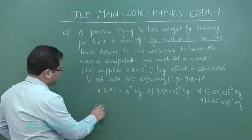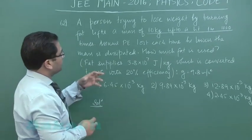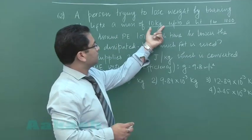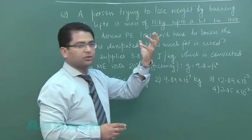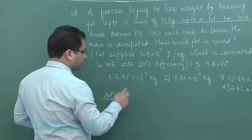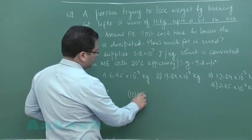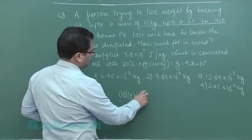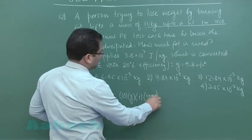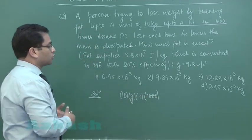Let us try to see the question. When the 10 kg block is being raised to a height of 1 meter, the potential energy that is MgH is stored, but this process has been repeated 1000 times, so this much is the total potential energy that has been raised.